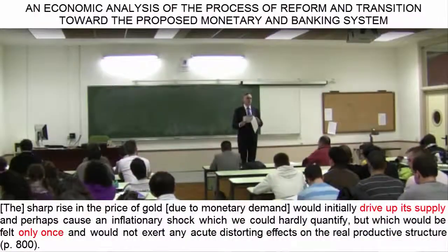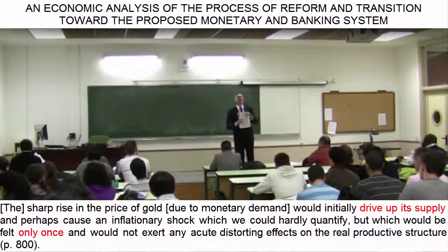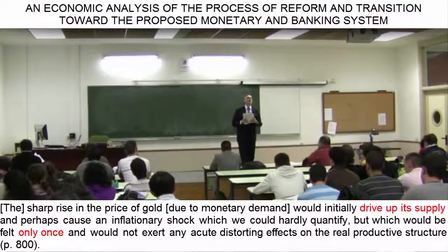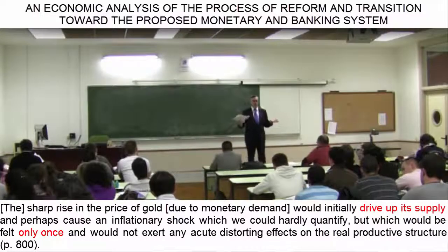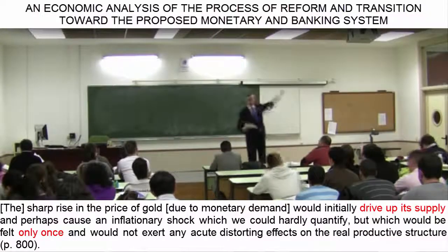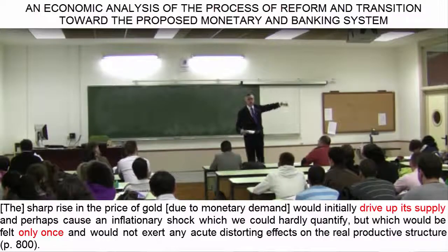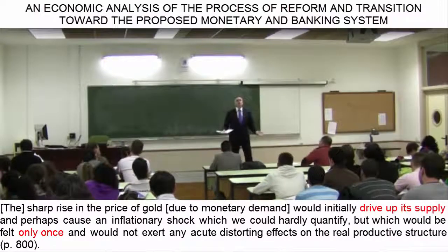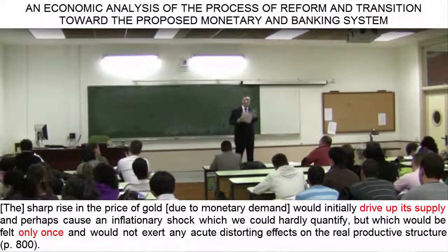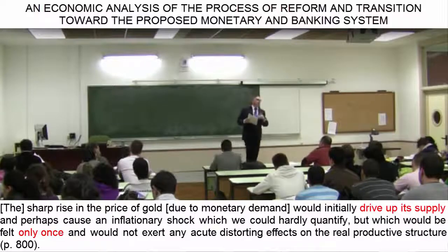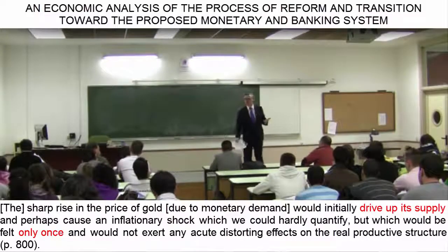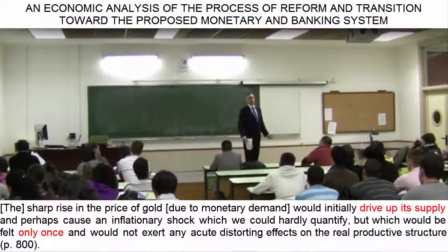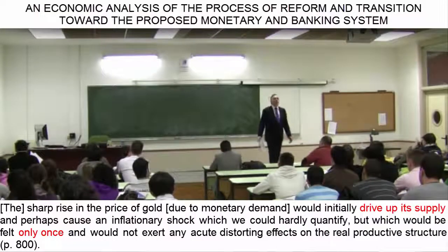And in the fifth stage, a pure gold standard and a 100% reserve requirement are in effect. The stages are analyzed along with the appropriate strategic principles. But I would like to make a couple of observations now. First, in the wake of the exchange and of the monetization of gold, the price of gold would rise significantly, because in addition to the current demand for gold for use in jewelry and industrial processes, as well as the speculative demand,